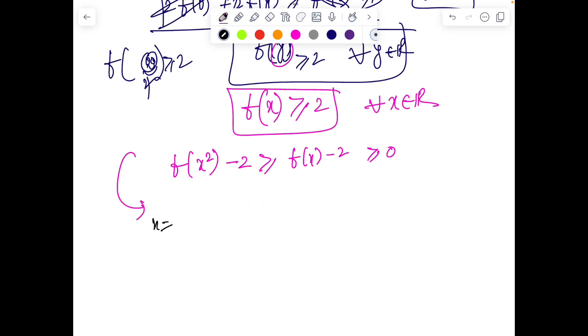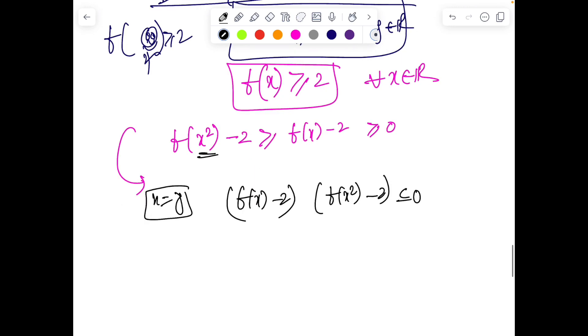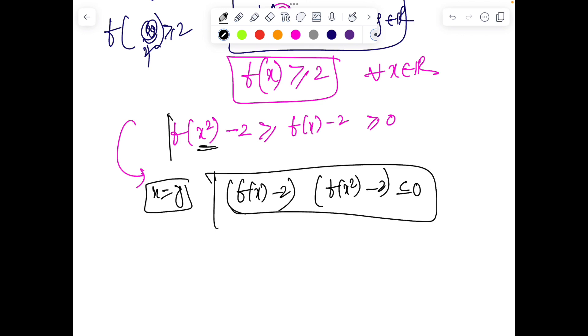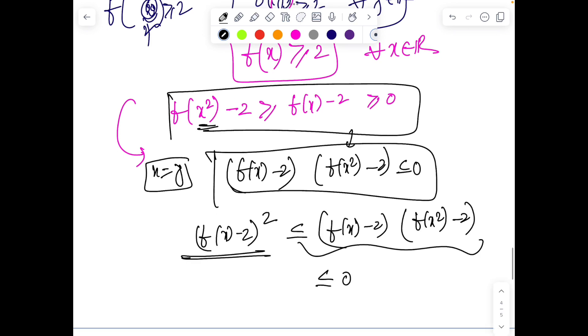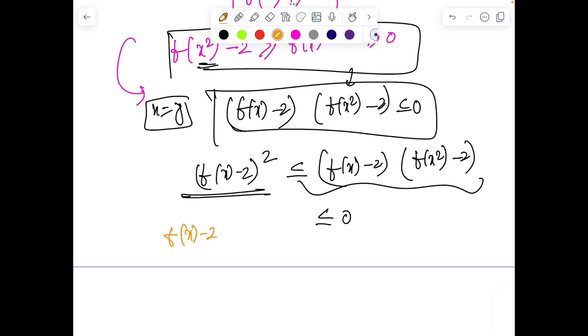Put x = y. Then f(x) - 2 times (f(x)² - 2) ≤ 0. From both equations, (f(x) - 2)² ≤ (f(x) - 2)(f(x)² - 2). This quantity is less than or equal to 0. Something squared is less than or equal to 0, and f is defined from real to real. So the only way this is true is f(x) = 2.